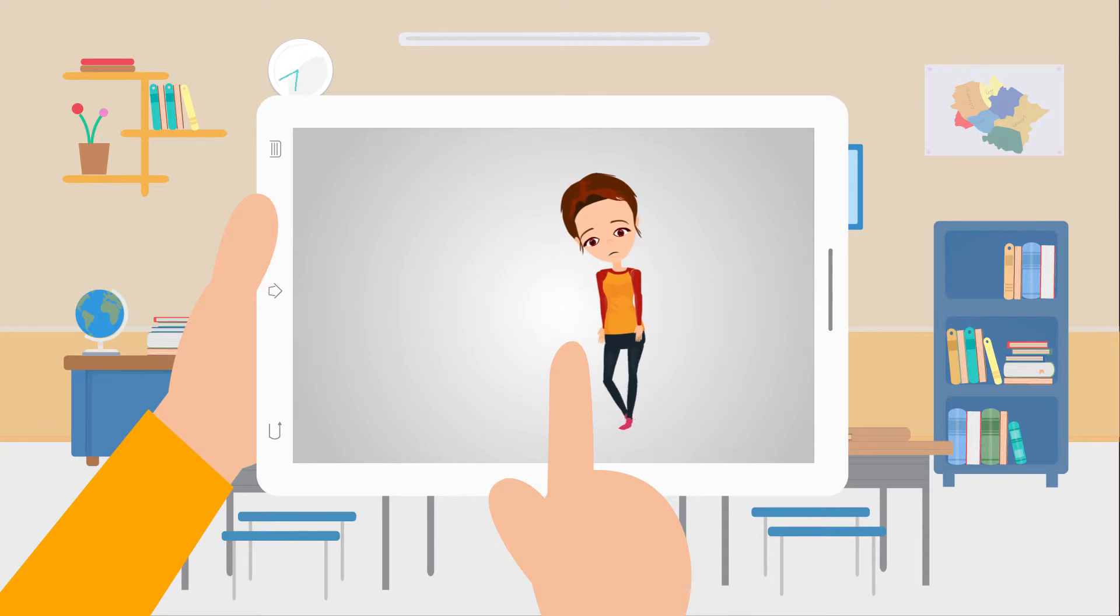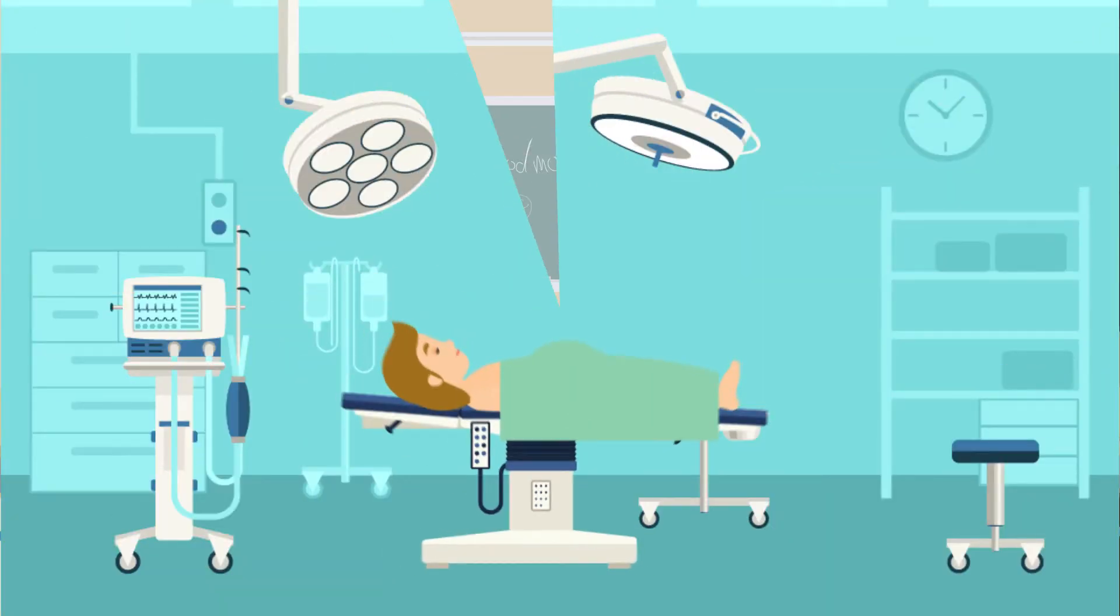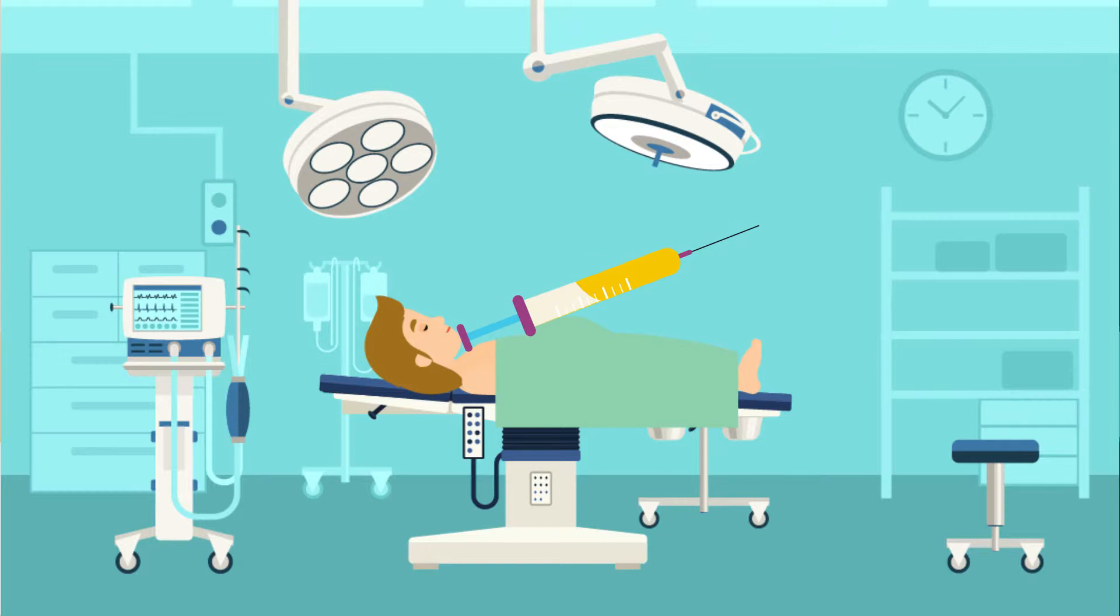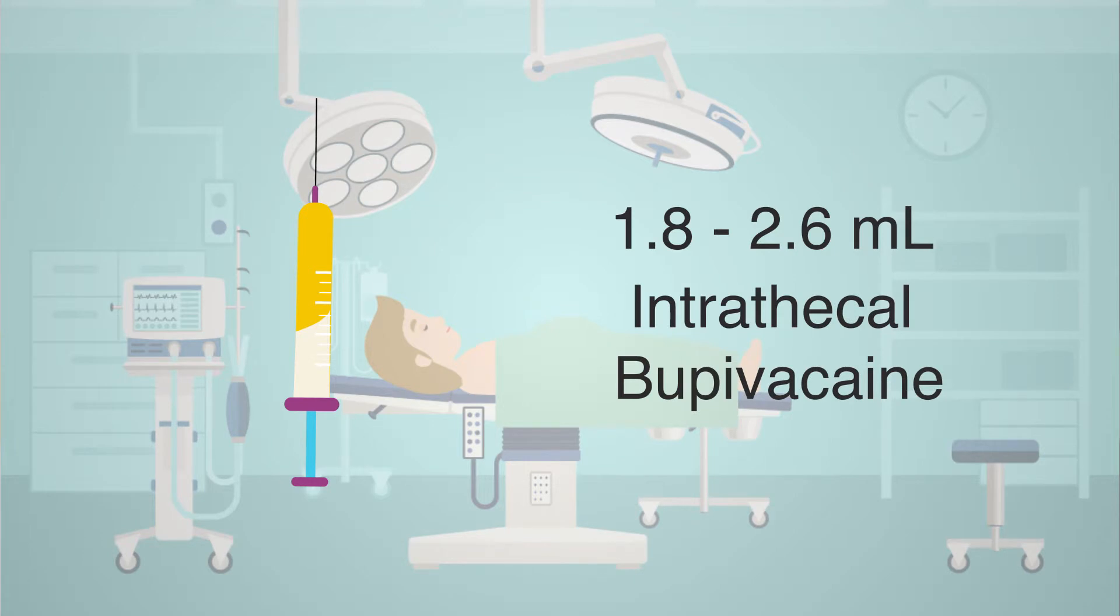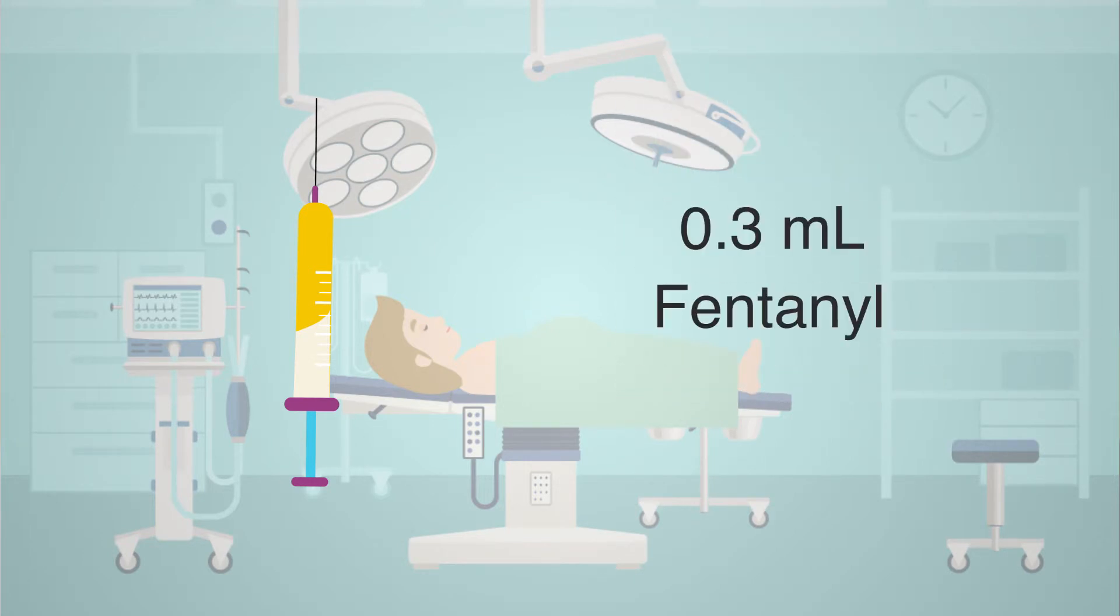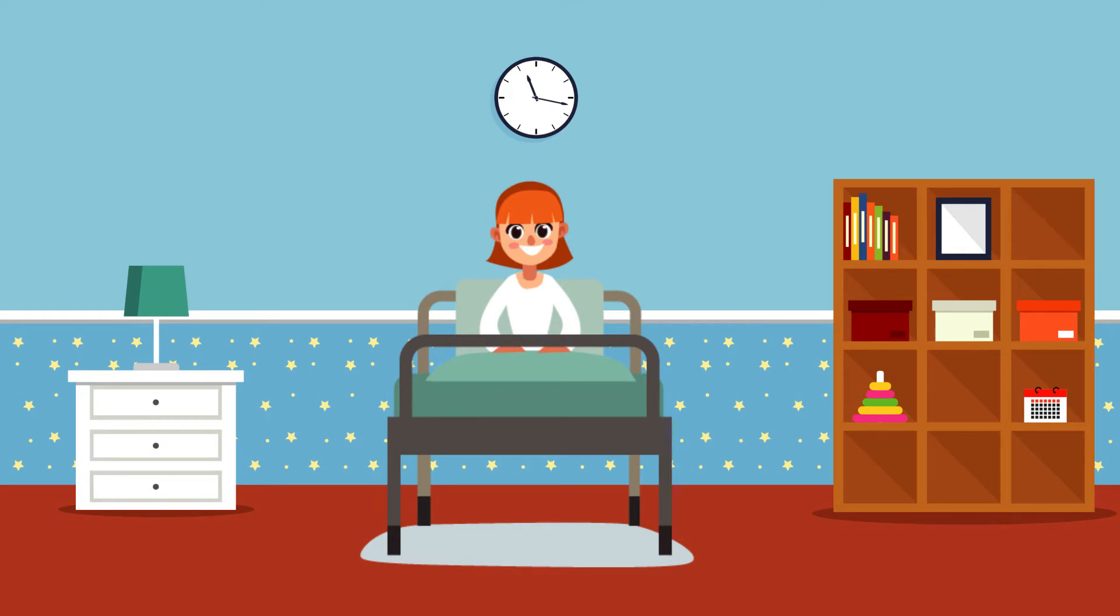All of the women were given spinal anesthesia, 1.8 to 2.6 mls depending on the body height, in vertical bupivacaine followed by 0.3 ml fentanyl.